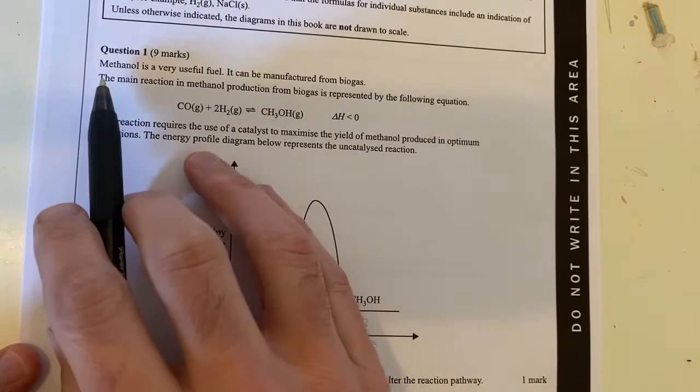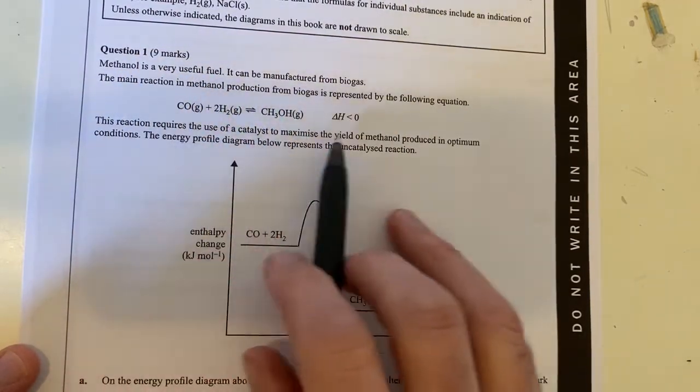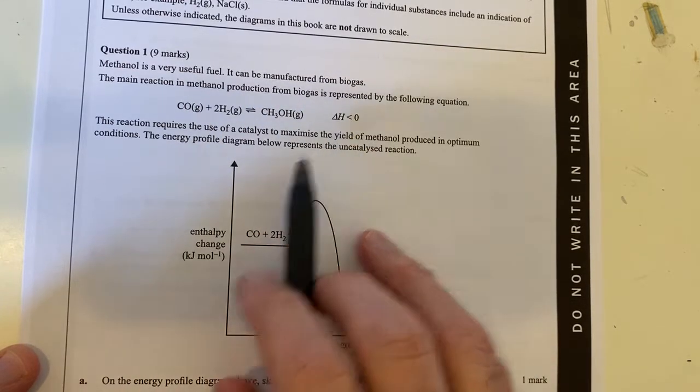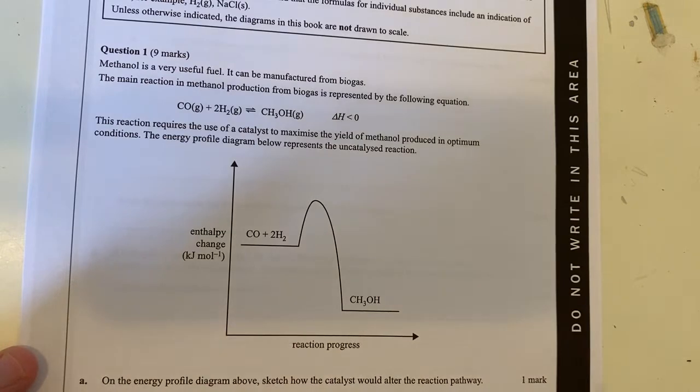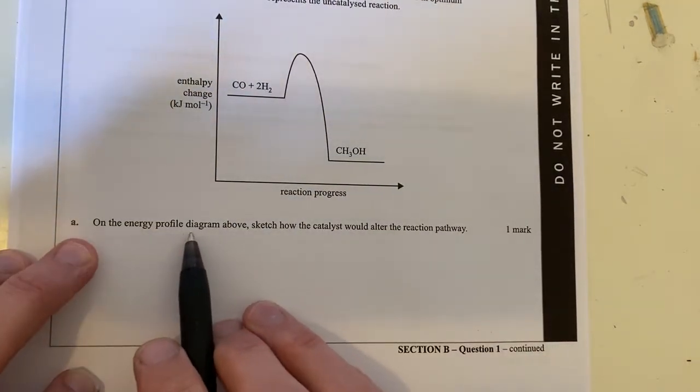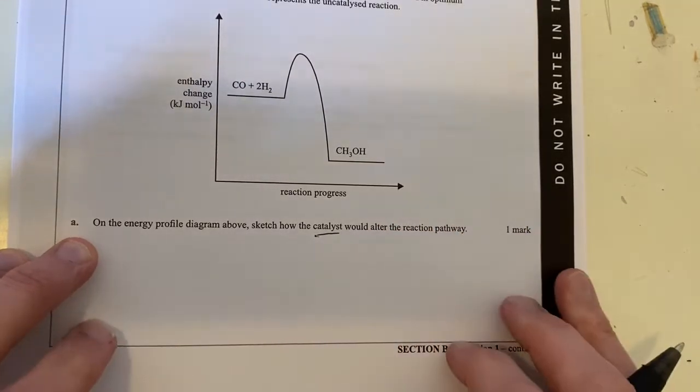Now the question here basically is methanol is a very useful fuel. We've got a reaction here saying that the delta H here is negative by the looks of it. We've got an energy profile diagram. Let's just look at the actual question itself. On the energy profile diagram above, sketch how a catalyst would alter the reaction pathway.